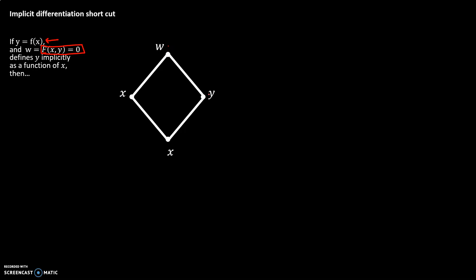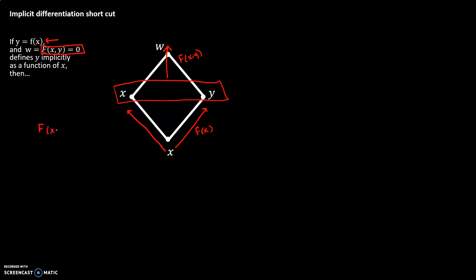If we have that, we can draw a branch diagram for our partial derivatives. Capital F takes in x and y, but we know y is a function of x. So x goes to y through little f of x, x goes to x just because that's always true, and x and y together go into capital F to make W. Since our goal is to find dy/dx, we take the derivative of F(x, y) = 0 with respect to x.